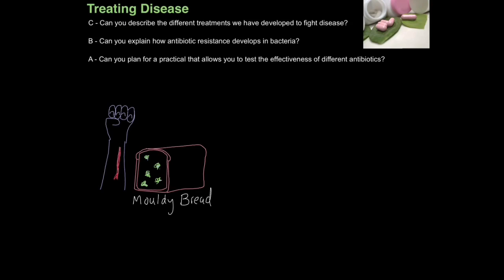Well firstly, it's important to acknowledge that mould is a living organism — it's a type of fungus. Just like we want to protect ourselves against diseases, all organisms have developed some strategy to fend off pathogens. Bread mould, for example, produces the chemical penicillin. Penicillin is an antibiotic, a chemical agent that fights infection, and it was completely accidentally discovered by the scientist Alexander Fleming.